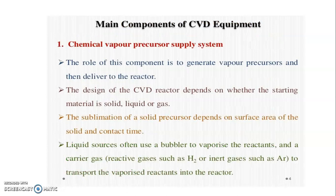The main components of the CVD system: the first component is to generate vapor precursors and deliver them to the reactor. The design of the CVD reactor depends on whether the starting material is solid, liquid, or gas. Some limitations of a solid precursor depend on the surface area of the solid and contact time. Liquid sources use a bubbler to vaporize the reactant, and a carrier gas like H2 or an inert gas like argon is used to transfer the vaporized reactant into the reactor.